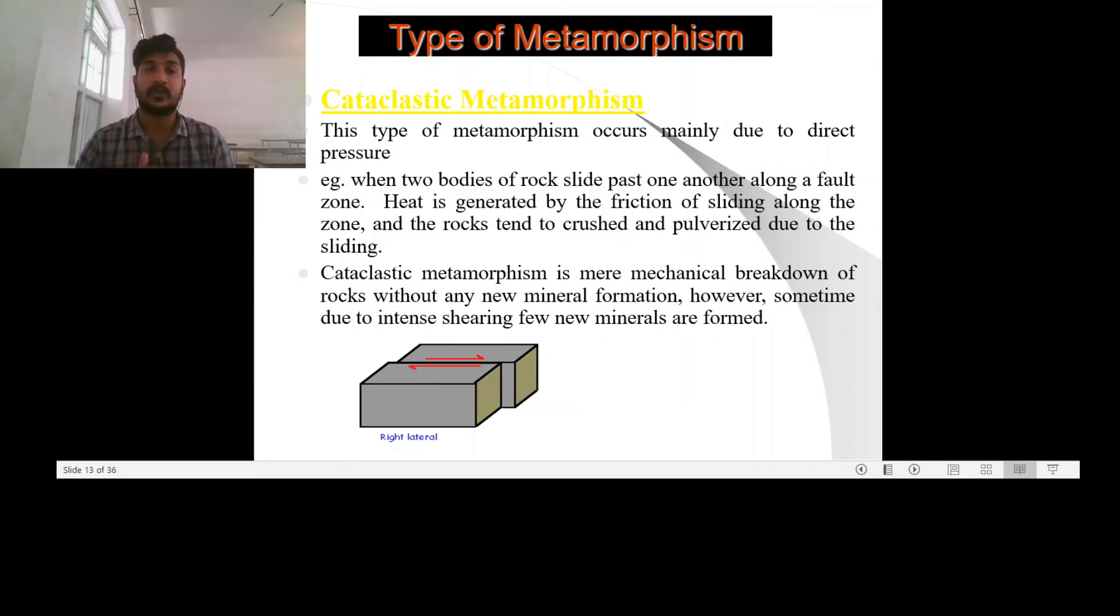Pseudotachylyte is a fault zone rock which is black and glassy. It occurs as narrow dikes and veins and it is formed due to the frictional melting of the country rock.